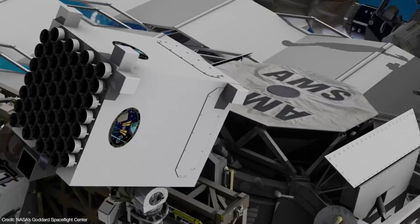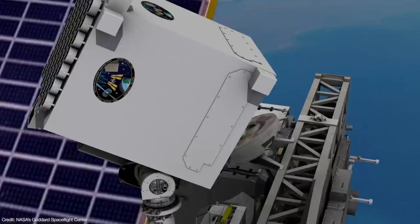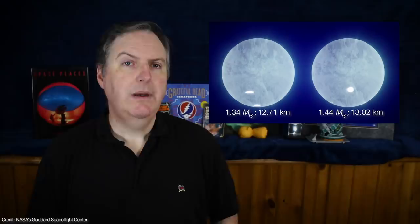As J0030 spun, its x-ray flux was precisely measured by NICER. Two teams of astronomers worked independently to infer the pulsar's properties from the NICER data. It turns out both teams got very similar results.